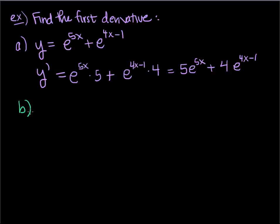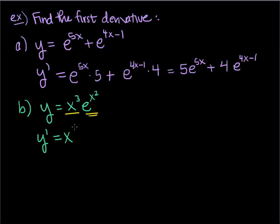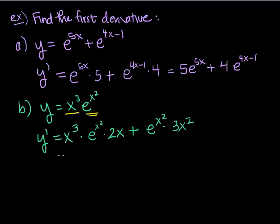Let's look at another one that might be a little more interesting. What if we had y equals x cubed times e to the x squared? In this case we're going to do the product rule because we have one function times another function. We leave the first — x cubed — times the derivative of the second, which gives e to the x squared times the derivative of the inside, 2x. Then plus leave the second times the derivative of the first.